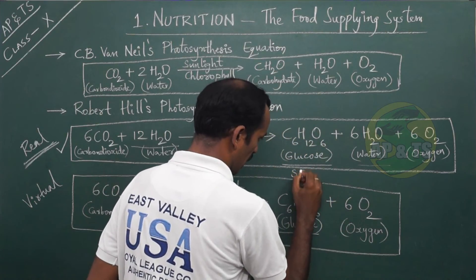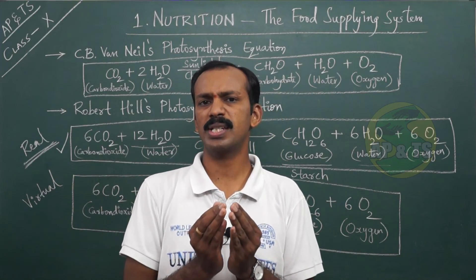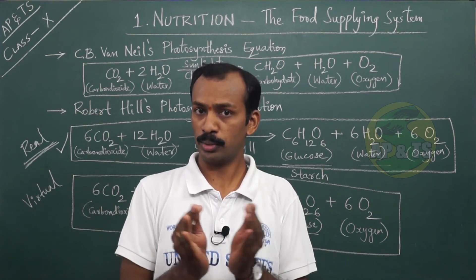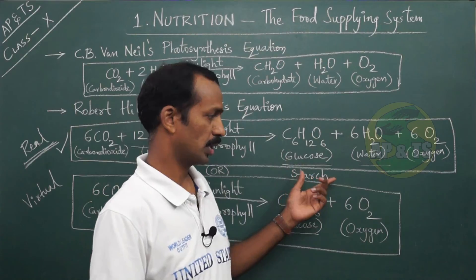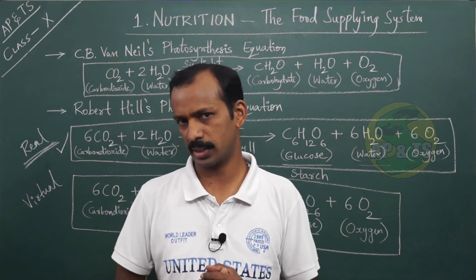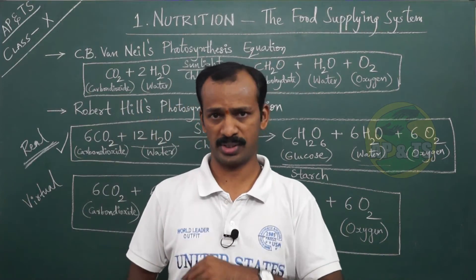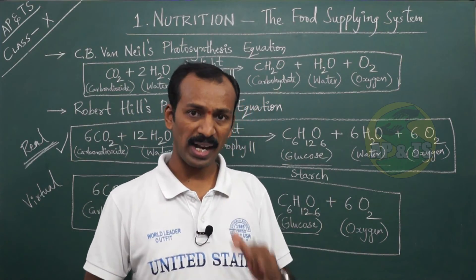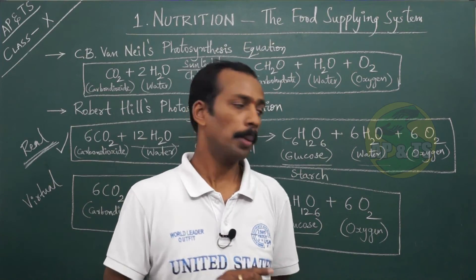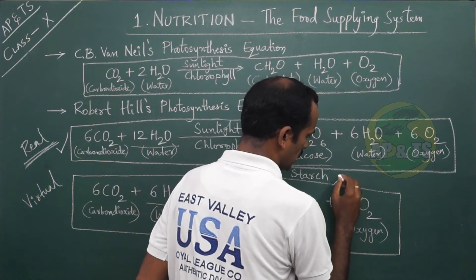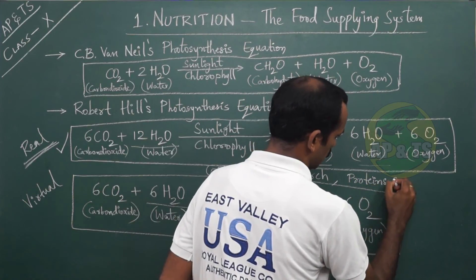Starch is a complex carbohydrate formed when several glucose units club together. Cellulose is also a complex carbohydrate. Plants not only produce carbohydrates but also other compounds. They produce proteins and fats as well, by converting carbohydrates into those forms.